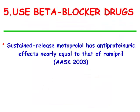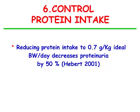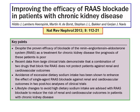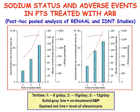Beta-blocker drugs should be used because it has been shown that sustained-release metoprolol has anti-proteinuric effects nearly equal to those of ramipril. Control protein intake is also important, as it has been demonstrated that reduction of dietary protein intake can decrease proteinuria by 50%. A paper published in Nature Reviews Nephrology focuses on the importance of restriction of sodium intake in patients with proteinuria. The author performed a pooled analysis of the RENAAL and IDNT studies, both published in the New England Journal of Medicine in 2001.